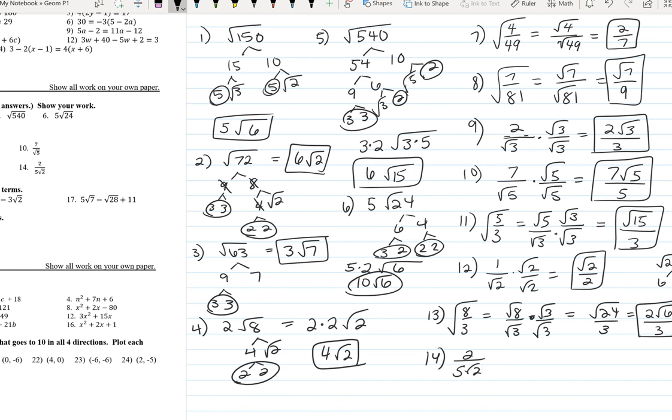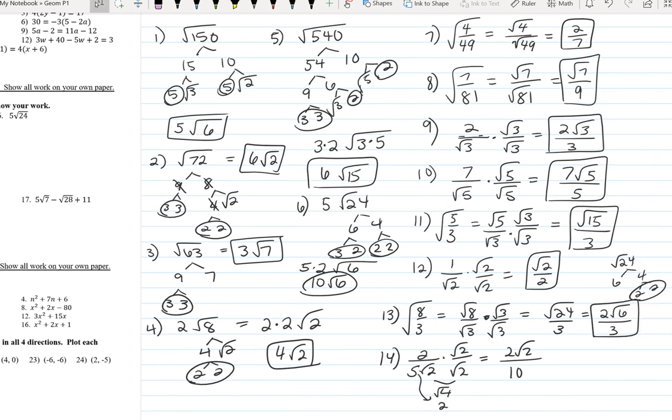Alright so when we rationalize this denominator all we have to do is multiply by root 2. You do not need to multiply by the 5. So what happens is when you multiply those together you get square root of 4 which is 2 and then 5 times 2 is 10. This is where we can simplify. So 2 goes into 10 five times.